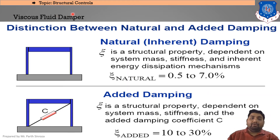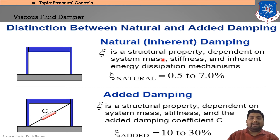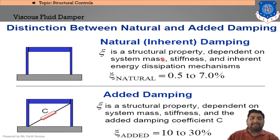First, we'll look at viscous fluid dampers by discussing the difference between natural and added damping. This is a portal frame consisting of two columns and a beam. It has natural damping, meaning structural damping inherent to a building due to material characteristics. The structural property xi is dependent on system mass, stiffness, and inherent energy dissipation mechanics.